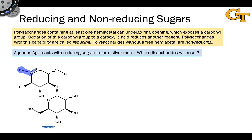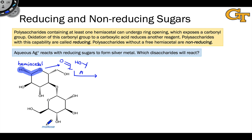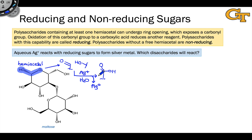Maltose contains a hemiacetal functional group. This structure can open to form an aldehyde, and it does this reversibly. It's not the most favorable form of the disaccharide, but it can do this to a small extent to form just a little bit of an aldehyde. That aldehyde can be oxidized. When we take maltose and dissolve it in water with a little bit of silver plus cation, we end up oxidizing the aldehyde to a carboxylic acid, and at the same time we reduce the silver plus to silver metal, which actually plates out onto the reaction flask as a silver mirror. Because the aldehyde found within maltose in the open form is capable of undergoing oxidation by silver plus, maltose is called a reducing sugar.